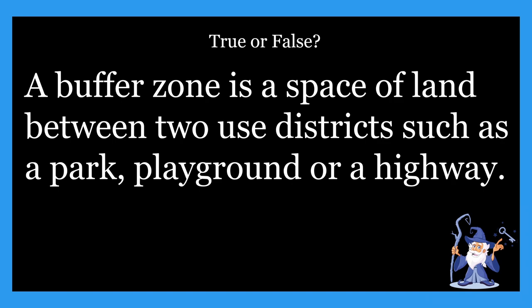Next one: a buffer zone is a space of land between two use districts, such as a park, playground, or highway. Is that true or false? The answer is going to be true. There is a slight misprint — it should say 'two districts' not 'two use districts' — but that doesn't change the answer. By definition, a buffer zone is a space of land between two districts, such as a park, playground, or a highway.